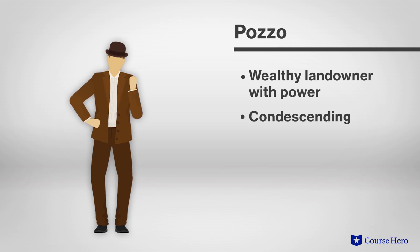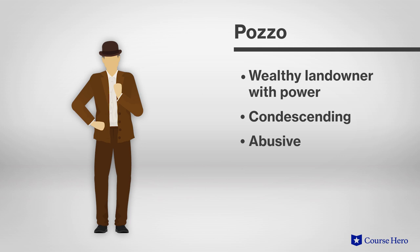Pozzo uses his power over his leashed slave Lucky to abuse him, but his power and resources are ultimately useless. They don't give his life meaning or protect him from misfortune, which shows up in the form of his becoming blind.